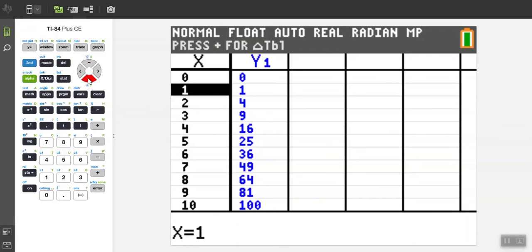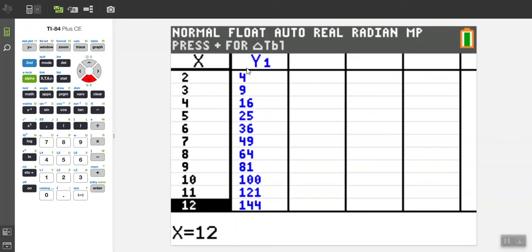You can scroll down if you need to, but we have 2 squared equals 4, 3 squared equals 9, 4 squared equals 16, etc.